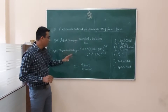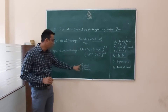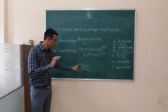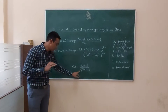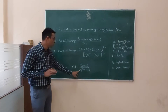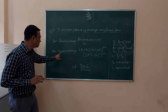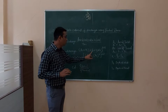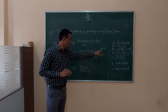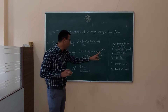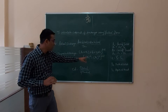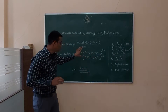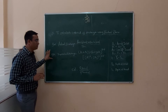The coefficient of discharge, CD, is equal to Q actual divided by Q theoretical — that is, actual discharge divided by theoretical discharge. The standard formula to calculate the theoretical discharge is: A1 multiplied by A2 multiplied by the square root of 2GH, all divided by the square root of A1 squared minus A2 squared.